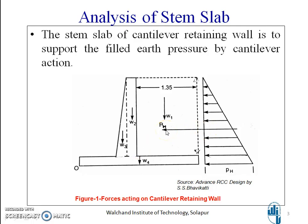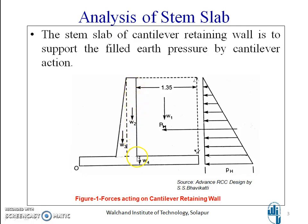Due to this particular earth pressure, the stem is going to bend. The face which is in touch with earth is having bending tension and the other face is having bending compression. Therefore the main steel, which will be vertical steel only, is to be provided on the earth fill side. The distribution steel will be perpendicular to it, and on the other side we can provide minimum steel.